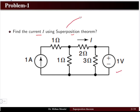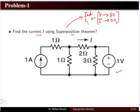Superposition theorem states that if you have multiple independent sources, you have to take one source at a time and obtain the responses keeping the other sources off. While keeping the other source off, the voltage source will be converted to a short circuit and the current source will be converted to an open circuit. This turning off of sources applies only to independent sources — you are never going to turn off a dependent source. The dependent source should not be removed from the circuit at any point.